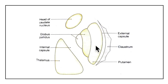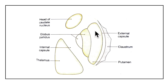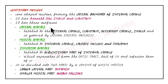The lentiform nucleus is divided into two parts by a thin lamina of white matter. The larger lateral part is called the putamen, which is similar to the caudate nucleus but contains small cells. The smaller medial part is called the globus pallidus and is made up of large cells.